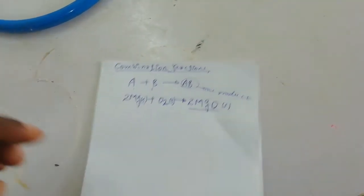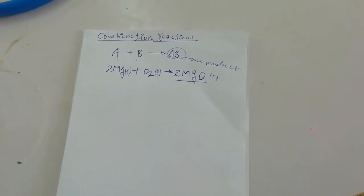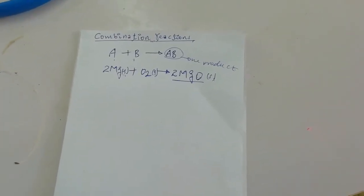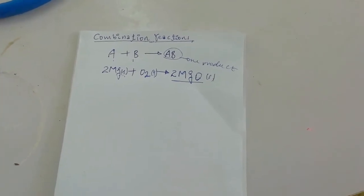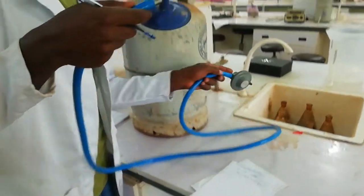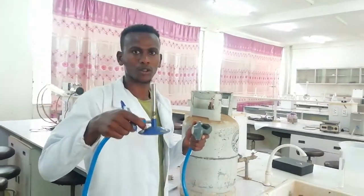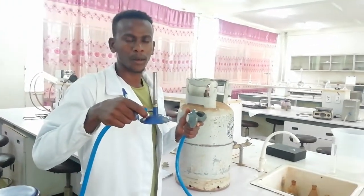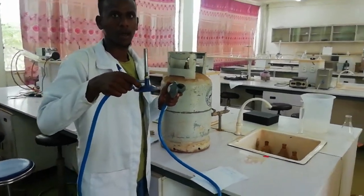We can get magnesium oxide from magnesium metal and oxygen gas by using the Bunsen burner as a heat source. The Bunsen burner is used as a source of heat to produce magnesium oxide by burning magnesium metal with oxygen.